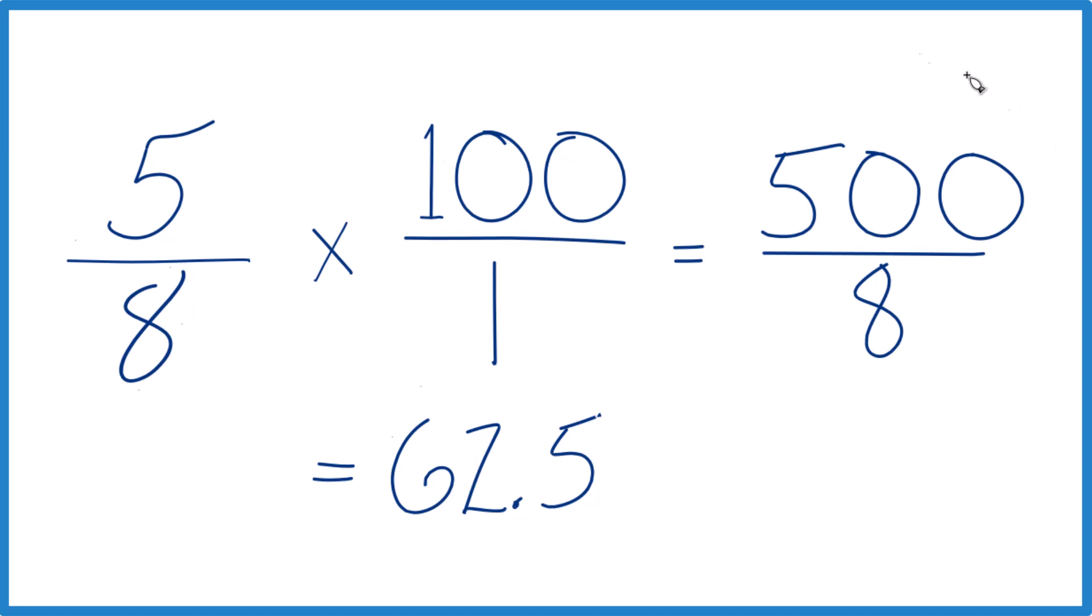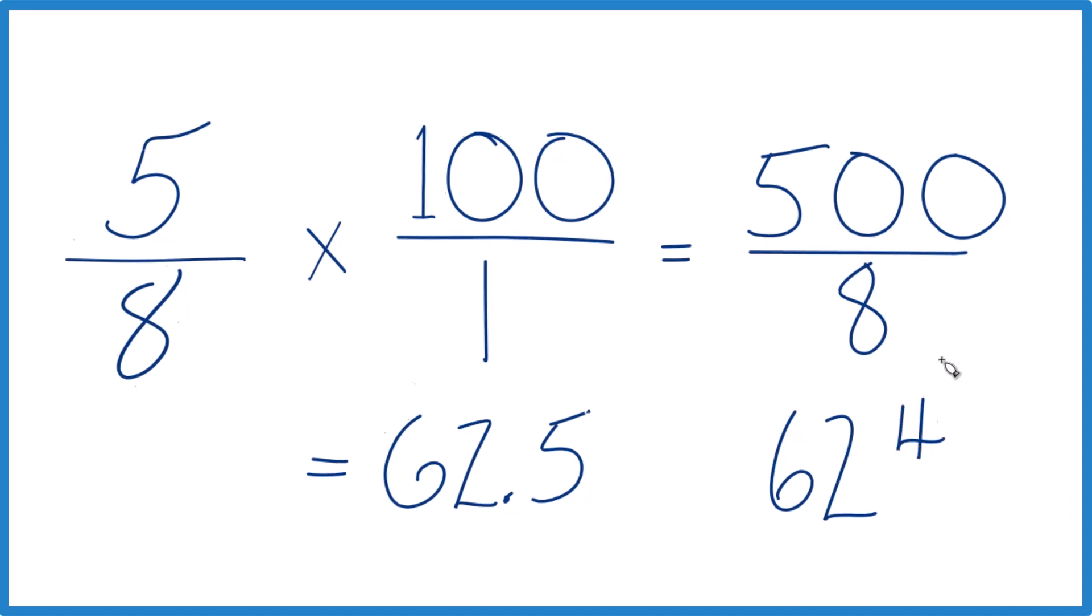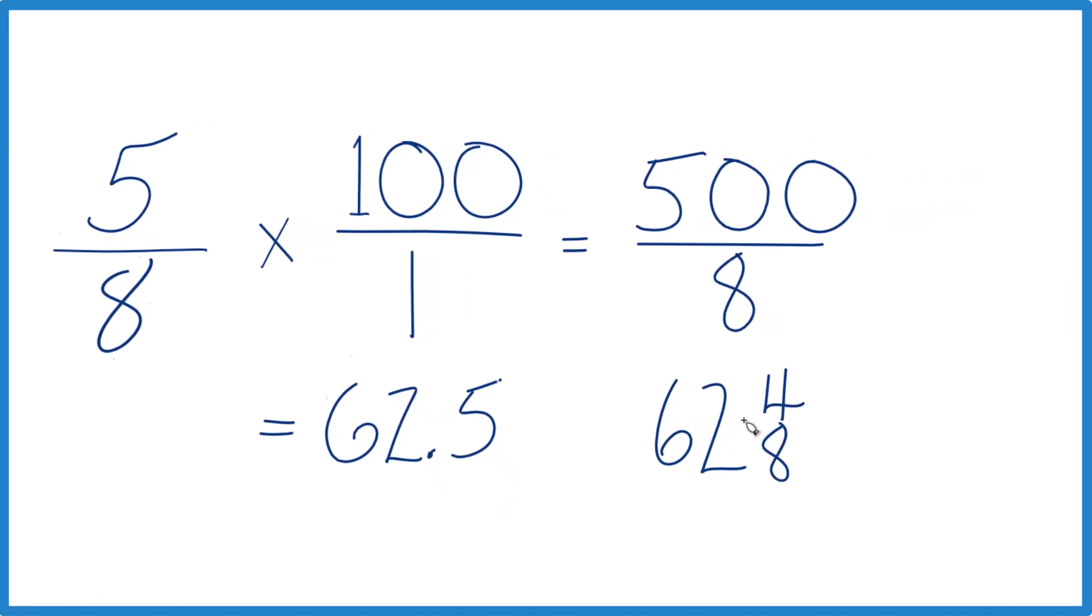For a mixed fraction, 8 goes into 500. It's 62 times 8. That's 496. So we'd have 4 left over, and then we'd keep the 8 on the bottom. And 4 eighths is the same as 1 half. So we could call this 62 and 1 half. That would be the lowest form.